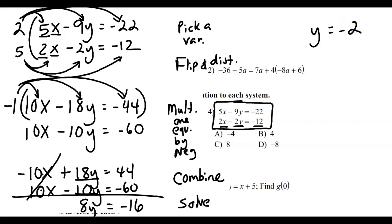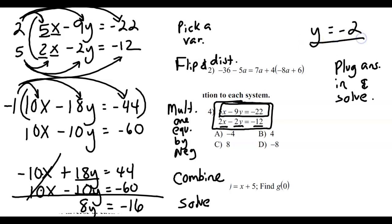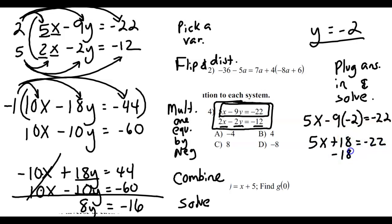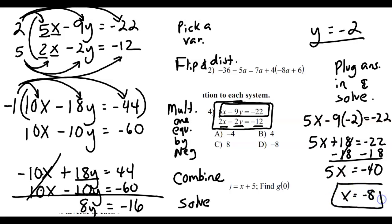In this case I didn't get the answer I wanted — I wanted x but I found y. That's okay. To find the last variable, you plug your answer into one of the original equations and solve for the other variable. So suppose I chose 5x minus 9y equals negative 22 — I'm going to plug in negative 2 for y and solve for x. We subtract 18 on both sides and end up with negative 40 over here when we combine negative 22 and negative 18. Then division on both sides gives x equals negative 8, so my answer is d.